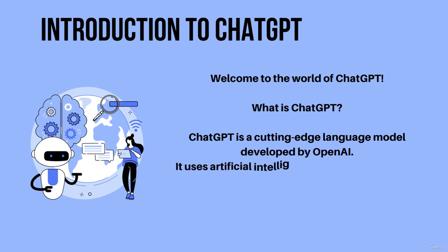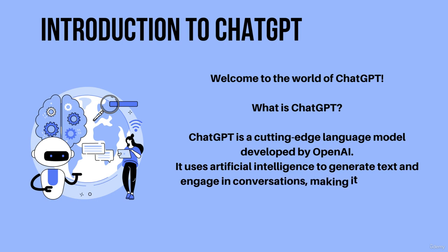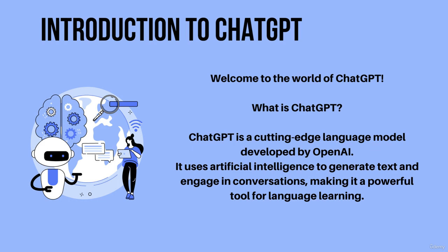What is ChatGPT? It's a cutting-edge language model developed by OpenAI. It uses artificial intelligence to generate text and engage in conversations, making it a powerful tool for language learning. It can understand and respond in human-like language. It has been trained on a vast amount of text data and can recognize patterns and structures in languages that are difficult for us to identify. By leveraging this power, we can create interactive and engaging language learning experiences to help you improve your language skills quickly and effectively.